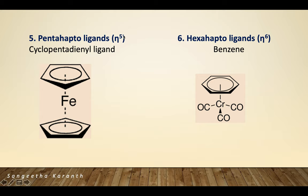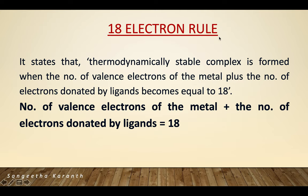Pentahaptoligands (η5): in ferrocene, iron is sandwiched between two cyclopentadienyl rings, so five carbons are coordinated with the central metal. For hexahaptoligands (η6), six carbons are coordinated with the metal. A simple example is benzene, where all six carbons of benzene are coordinated with the chromium metal.